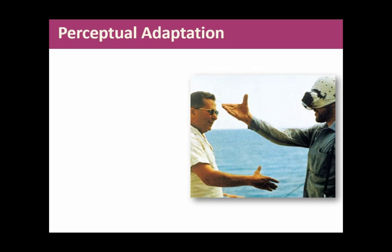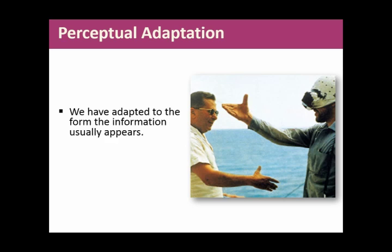Here's a picture of a guy wearing goggles that are displacing his vision — he thinks he's reaching out to where his visual field shows the other guy's hand, but he's off by some degrees. You've gotten used to your sense organs providing information in a particular way. As light passes through the pupil and hits the lens, it flips over and lands upside down on the back of the retina — you've adapted to that. We've adapted to the form that information usually appears in, but we could adapt to something else. They've had people wear upside-down glasses where the world first hits a mirror, then enters the eyes, so it actually lands on the retina right-side up.